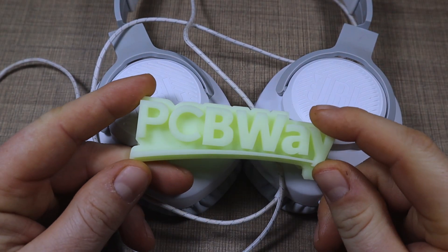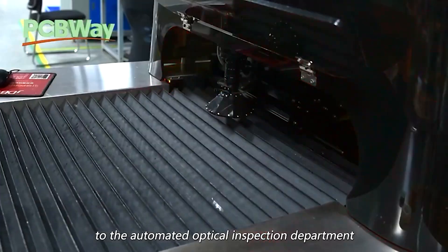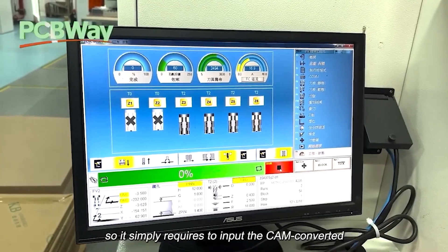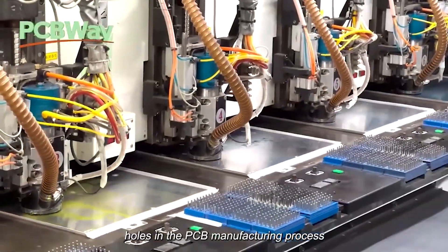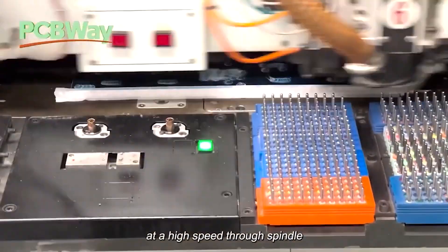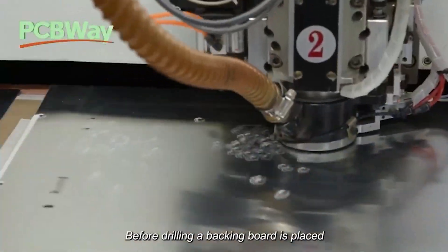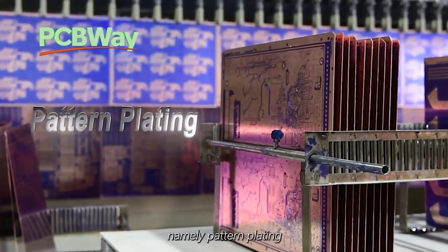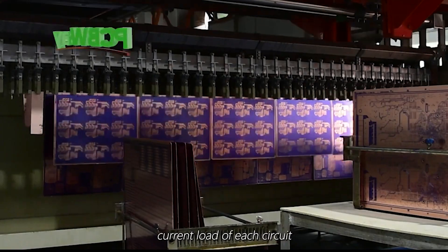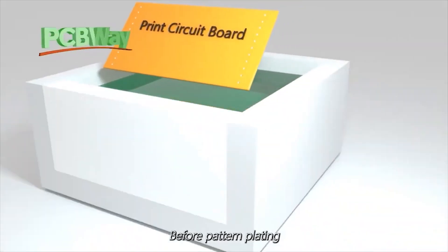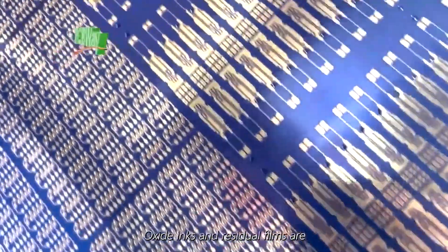PCB Way is a professional quick turn PCB prototyping, PCB assembly, and low volume production manufacturer located in Shenzhen, China. They have more than a decade of experience in the industry and they offer a wide range of services including PCB prototyping, CNC machining, 3D printing, injection molding, and metal sheet fabrication. Their easy to use online ordering system, fast turnaround times, and high quality products make them the go-to choice for hobbyists, makers, and small businesses. Plus their customer support team is always available to answer your questions and provide assistance.